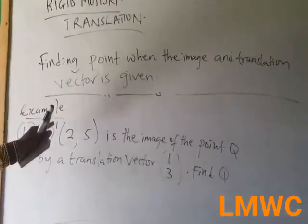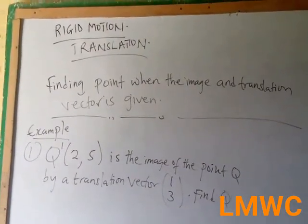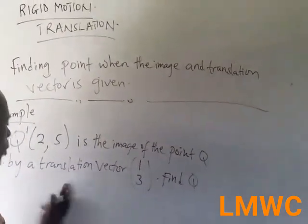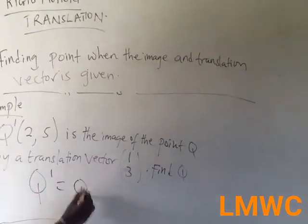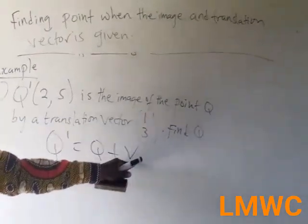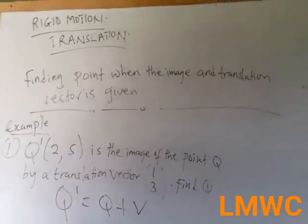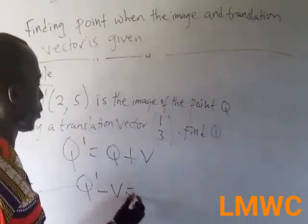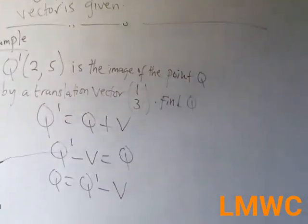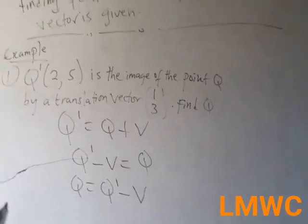Here is an example: K prime (2, 5) is the image of the point K by a translation vector (1, 3). Find K. We know K prime equals K plus V. So to find K, it becomes K equals K prime minus V. As stated, if you are given the translation vector and the image and asked to find the point, you subtract the translation vector from the image.